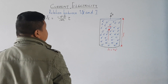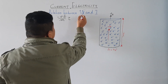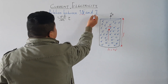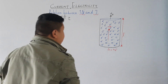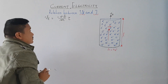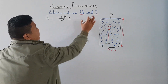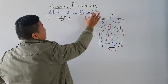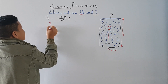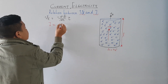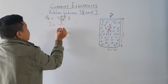Now in this lesson, we find the relation between drift velocity and the current. To do so, I have to write the first equation of current that we know: I is equal to Q by T.